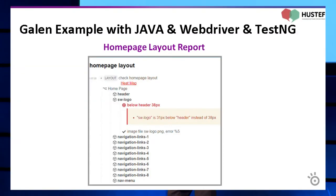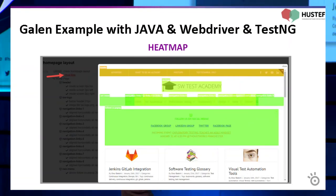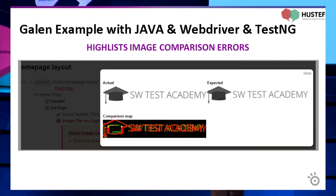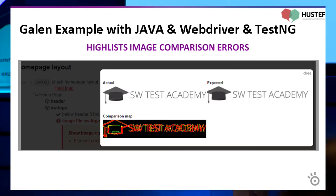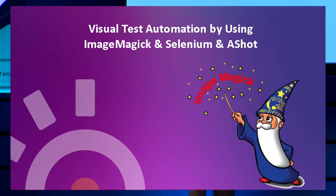You can see the heat map of your web elements by clicking the heat map link. Galen Framework also has the capability to do visual comparison and automatically highlights differences. Right now there is an offset problem visible, and Galen Framework automatically highlights that problem.